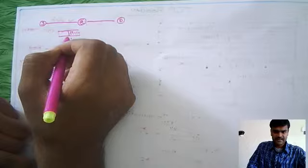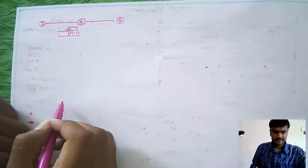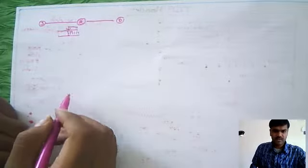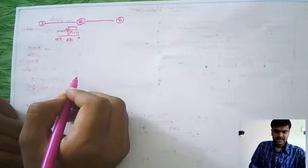That should be pointed by this URG pointer, how much data is important, because each byte has a sequence number in sequence order. Suppose if it is starting from 0 to 99, and your urgent data is up to 50 bytes, then in the urgent pointer you are going to set it as 50.